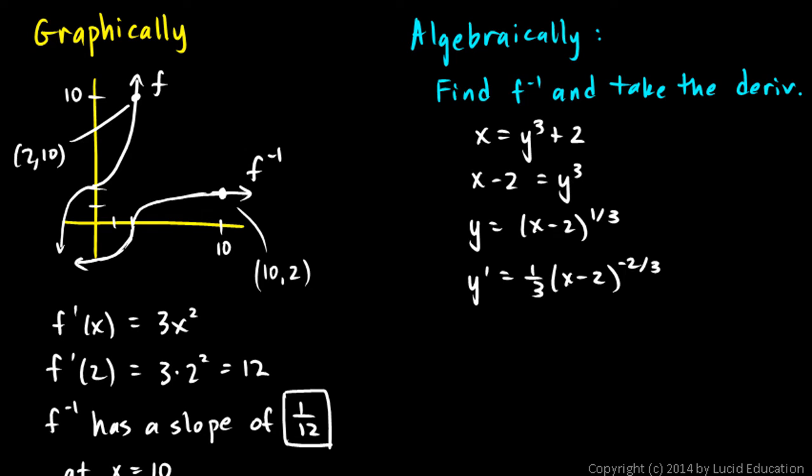So this is what we want. Y primed of 10 is going to be 1/3, and in parentheses here, we have 10 minus 2. That's 8 to the negative 2/3.